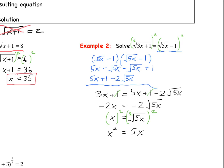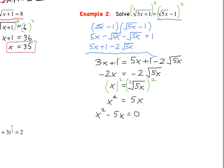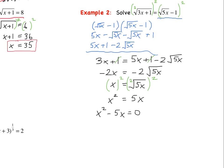We have a quadratic equation, so we set it equal to 0. We get x squared minus 5x equals 0. When solving a quadratic, first we try to factor. We can factor out a GCF of x, giving us x times x minus 5 equals 0. Using the zero product property, we get two answers: x equals 0 or x equals 5.